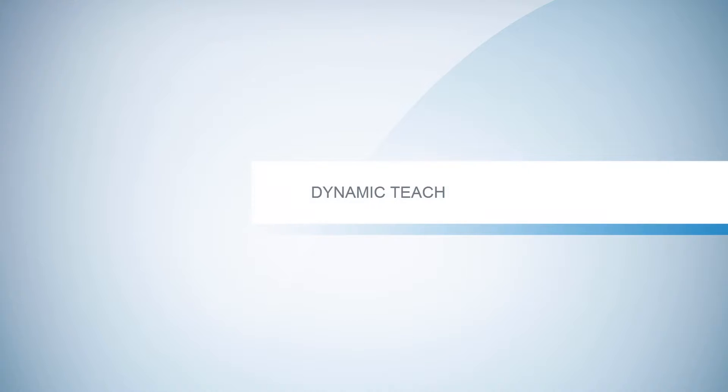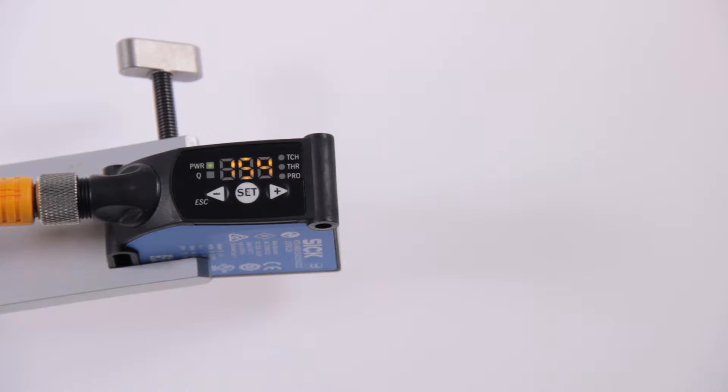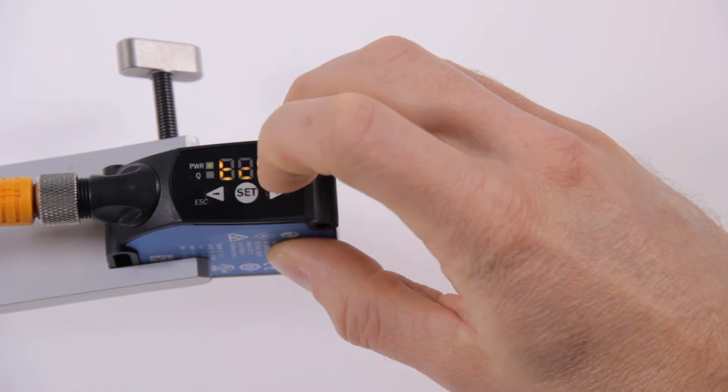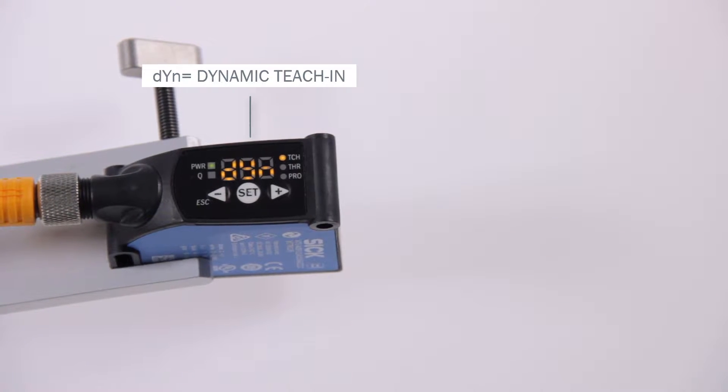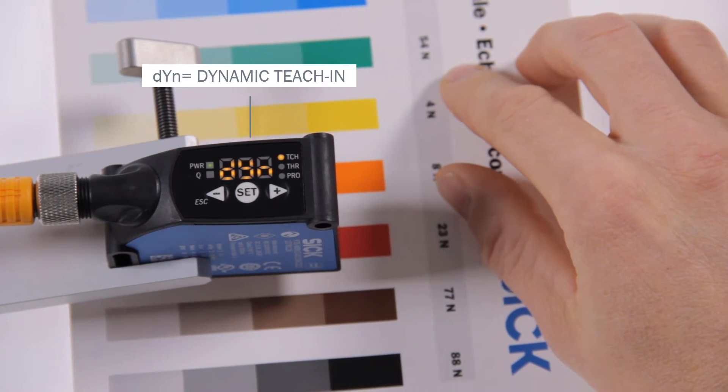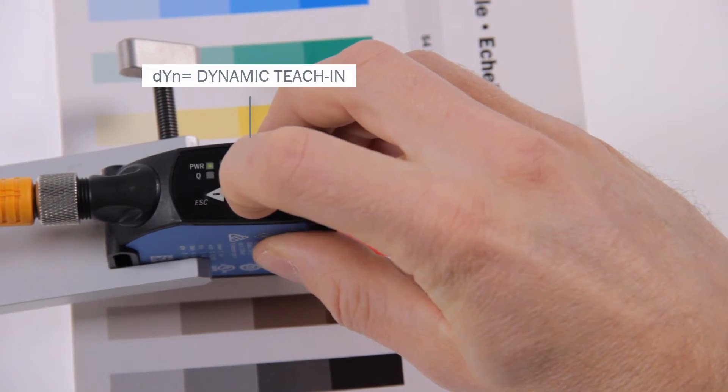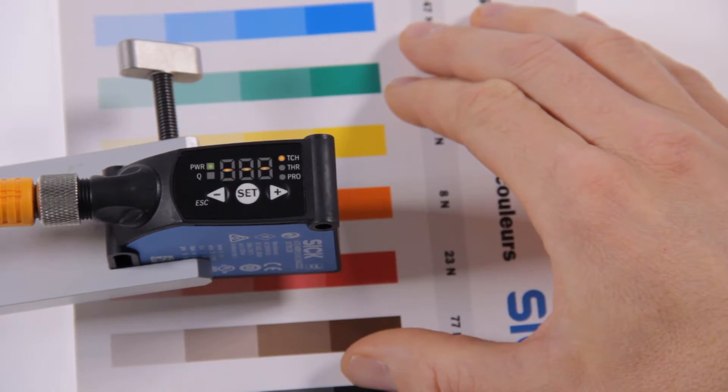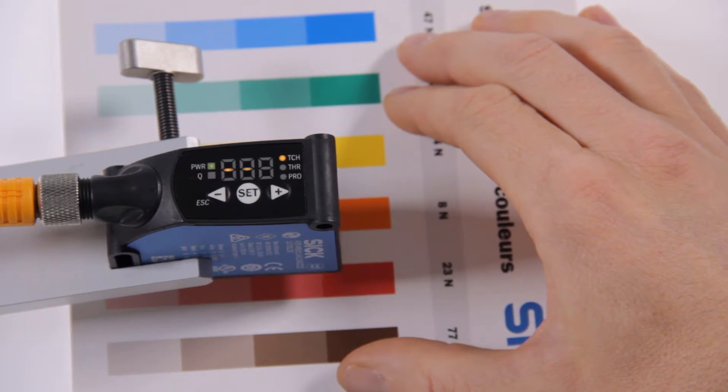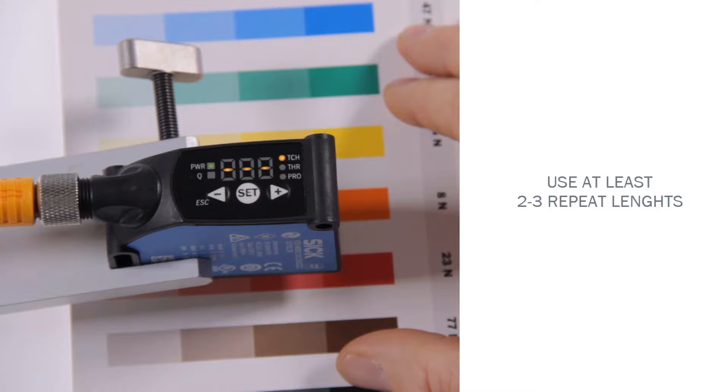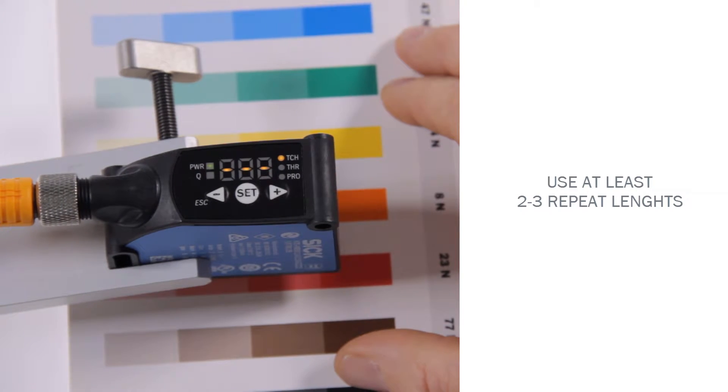Dynamic teach. Select the teach-in menu DYN for the dynamic teach-in method. Now move the print mark or the background under the light spot and press SET. Let mark and background move under the light spot for several times. During teach-in, the display shows a running bar graph. We recommend to use at least 2 to 3 repeat length. When finished, press the SET button again.